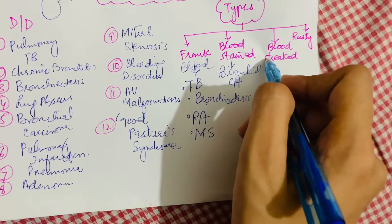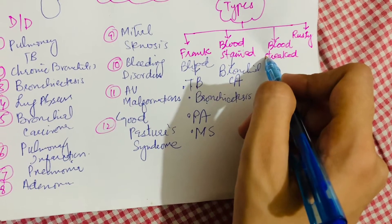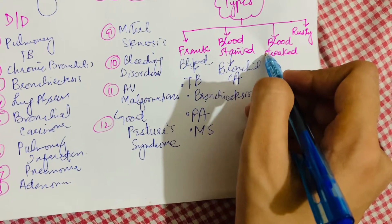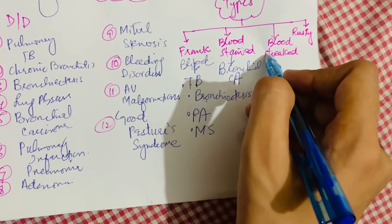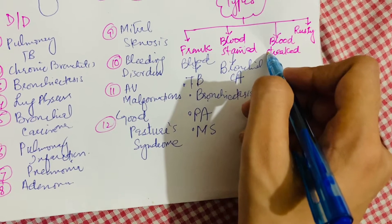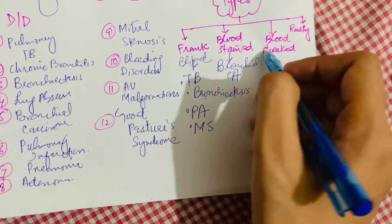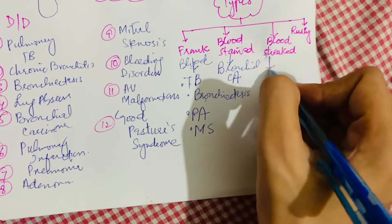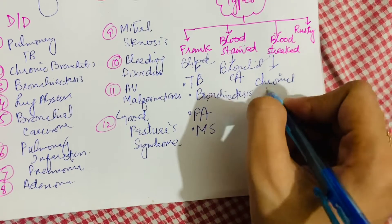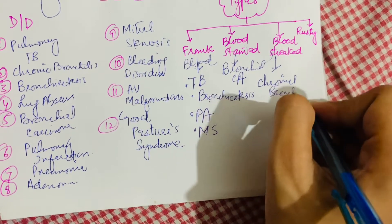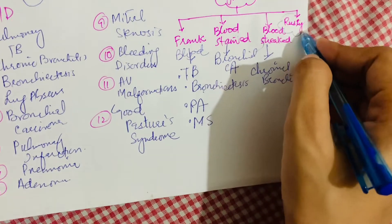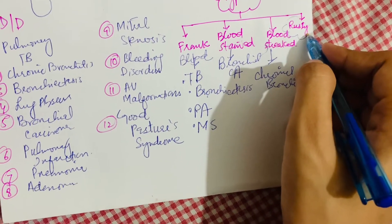The third type of hemoptysis is blood-streaked sputum. In this type, streaks of blood are present in mucoid or purulent sputum. It is frequently seen in chronic bronchitis, but may also occur in tuberculosis and bronchial carcinoma.